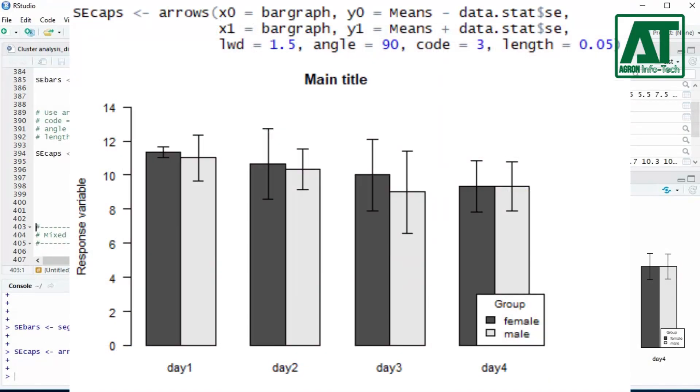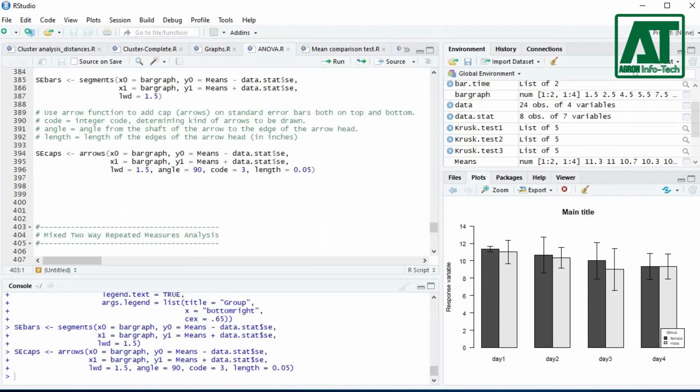I hope this video will help you to plot bar graphs for individual factors and interaction with factor categories. Please comment below if you have any questions.